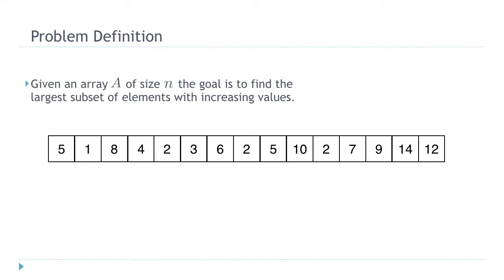Let me start by defining the problem formally. In this problem we have an array of size n, every element has some number, and the goal is to find a subset of these numbers that is increasing. For the sequence you can see on the screen, this is one potential solution. All of these yellow cells have increasing values, and this happens to be the largest. So the LIS for this sequence is equal to 7.